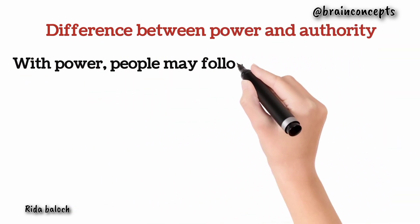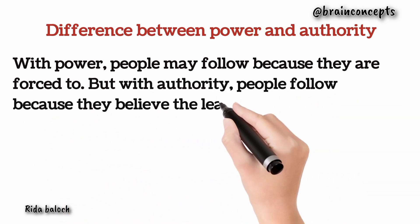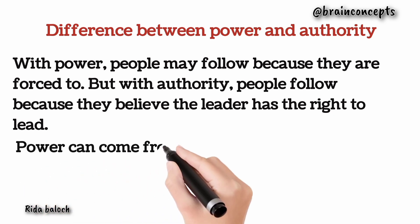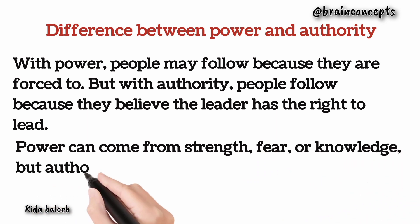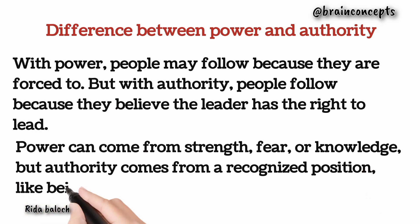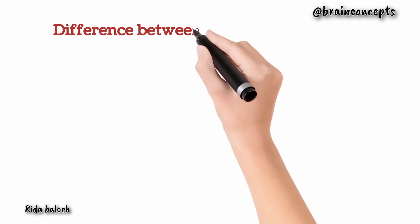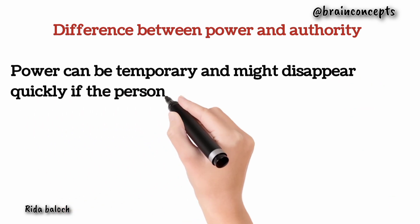Secondly, with power people may follow because they are forced to, but with authority people follow because they believe the leader has the right to lead. Power can come from strength, fear, or knowledge, but authority comes from a recognized position like being a president or a judge. With power, people may obey because they have no choice — like in a dictatorship — but with authority, people follow willingly because they respect the role.